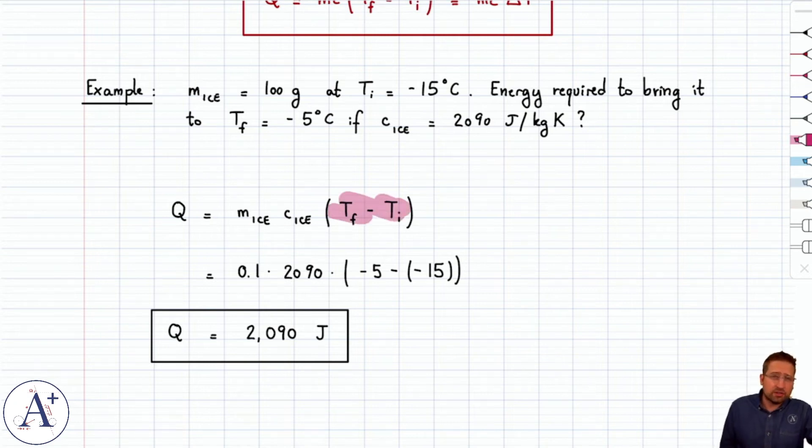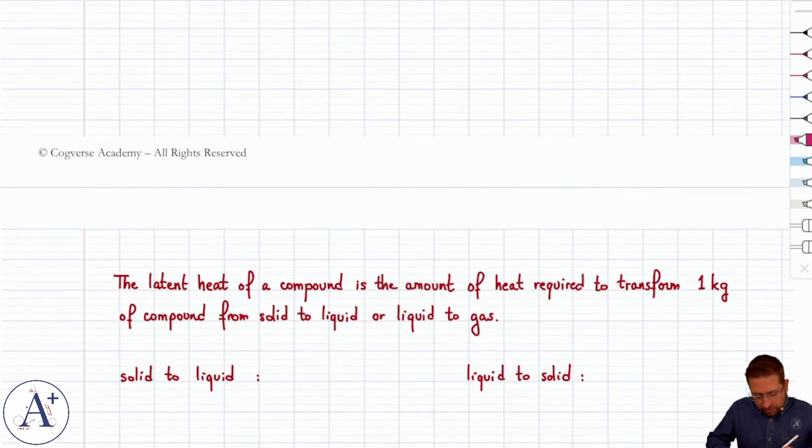T initial is T final during a phase change, because temperature doesn't change. So then you'd have Q equals 0. Well, that makes no sense. If you actually want to melt an ice cube into liquid water, you have to supply heat. It doesn't happen otherwise. So you couldn't argue that it's mc delta T, because if delta T is 0, Q is 0. And if Q is 0, the ice cube doesn't melt at all. So we need different formulas.